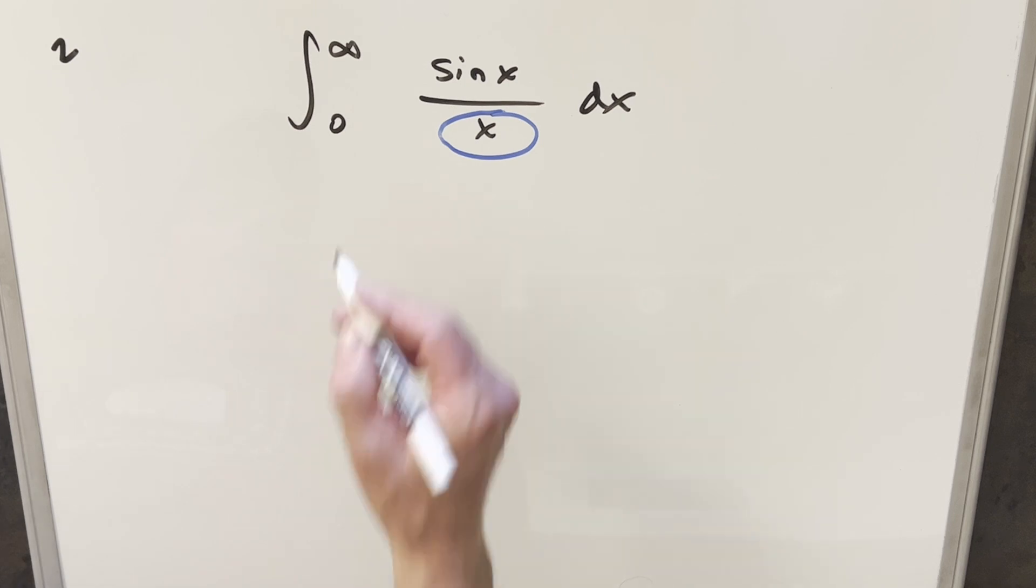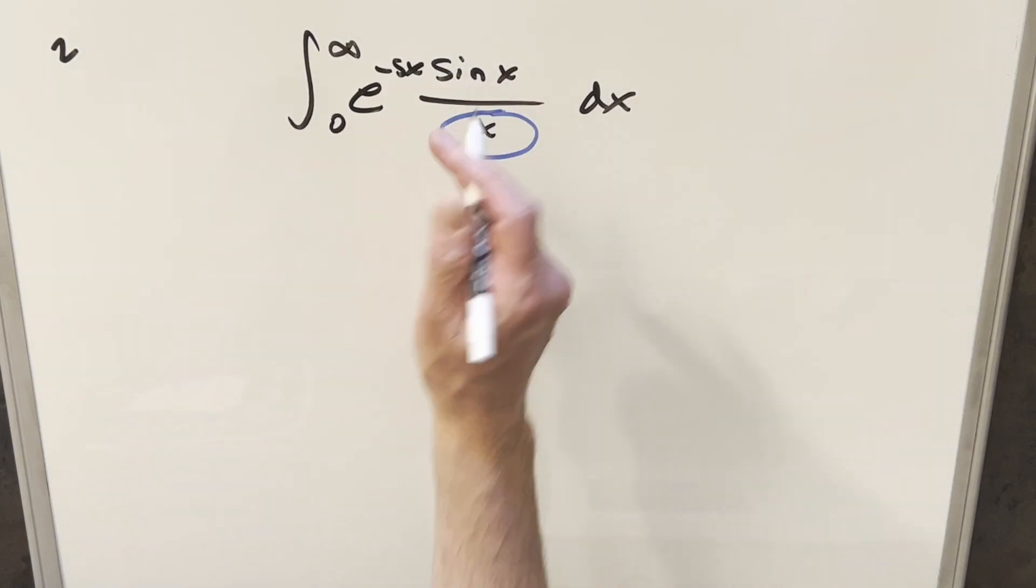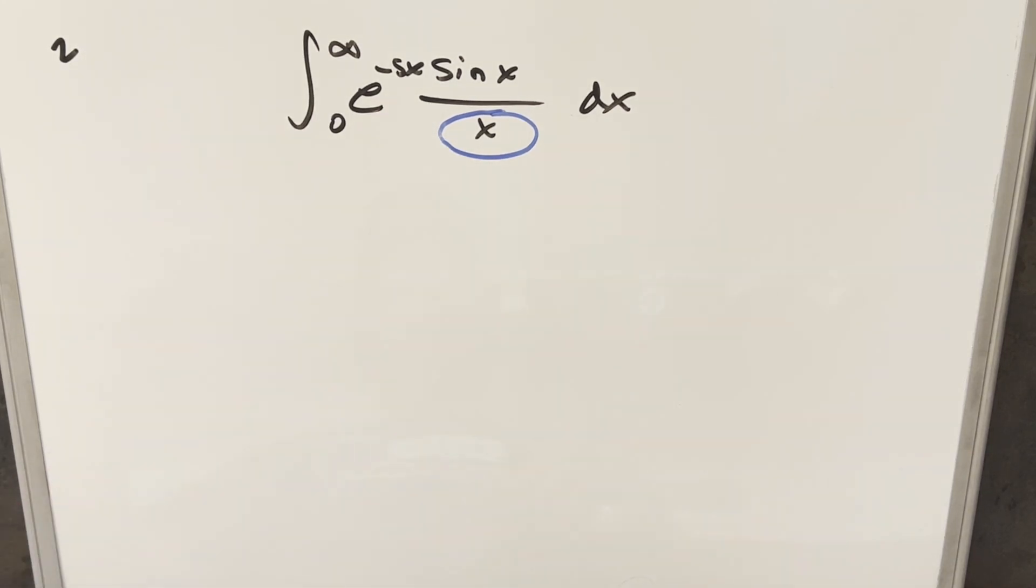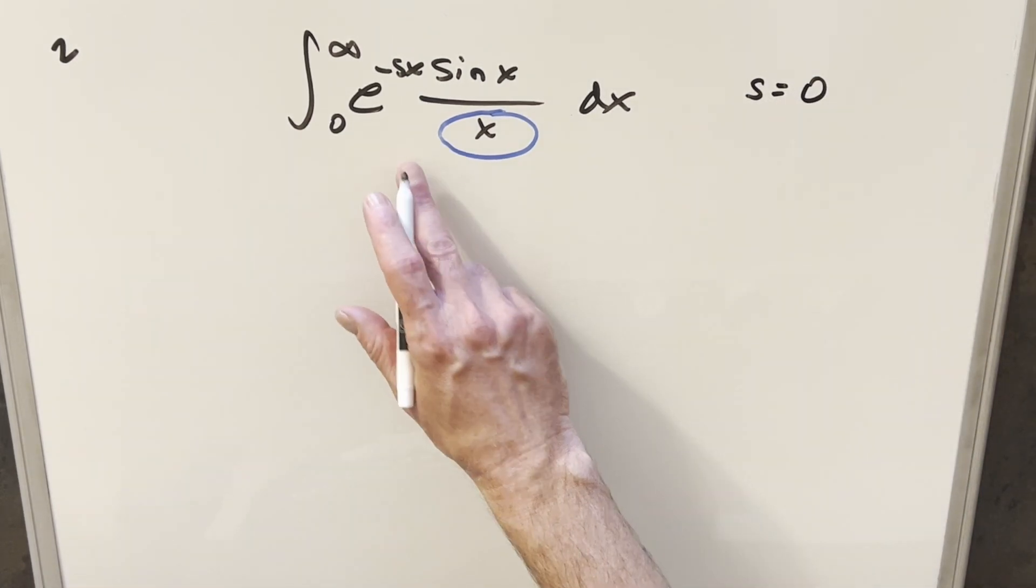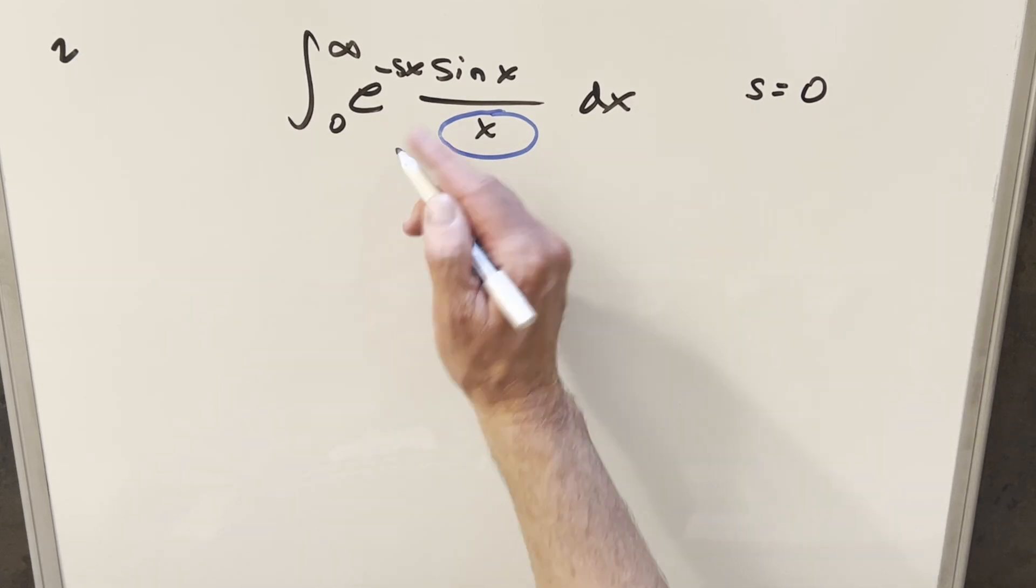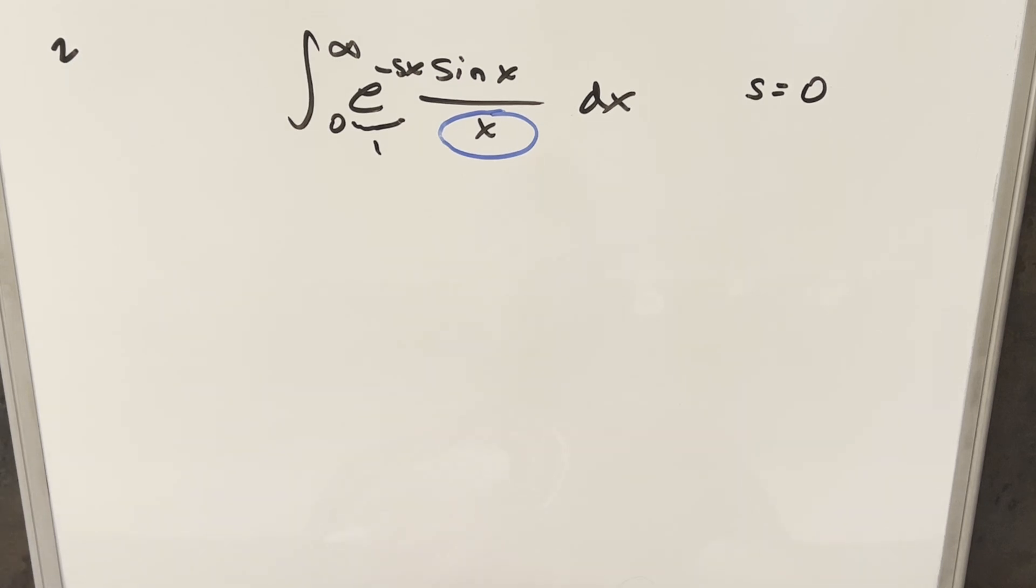So what I want to do here in order to get this in shape for a Laplace transform is multiply in here this term, e minus sx. Now I've created another variable, this s, and you may think I've changed it. But what we can do is set s equal to zero. We can say for our solution, we're going to want s to be equal to zero. When you do that, this piece here is just going to become one, so we haven't changed it.